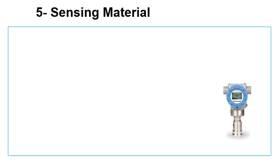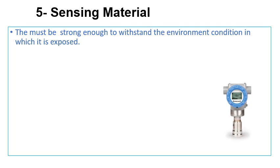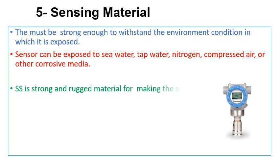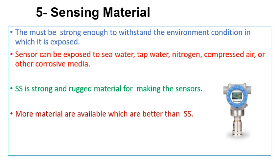Sensing material: the sensing material of a pressure sensor must be strong enough to withstand the environmental conditions it is exposed to. For example, the material can be exposed to process media such as sea water, tap water, nitrogen, compressed air, or other corrosive media. Most pressure transducers are constructed of stainless steel, as it is a strong and rugged material well suited for most applications. However, other materials are also available.